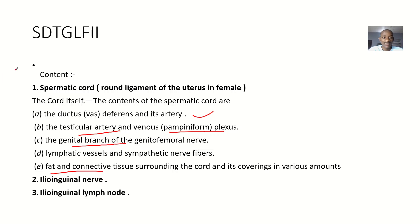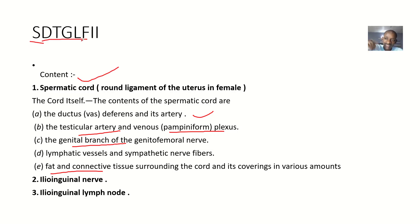So interrelating these with the mnemonic SDT-GLPII — that's how I call it: SDT-GLPII. The S stands for spermatic cord. Everything in the mnemonic stands for the contents of the spermatic cord, except the last two I's. The second-to-last I stands for the ilioinguinal nerve, and the last I stands for the ilioinguinal lymph node.